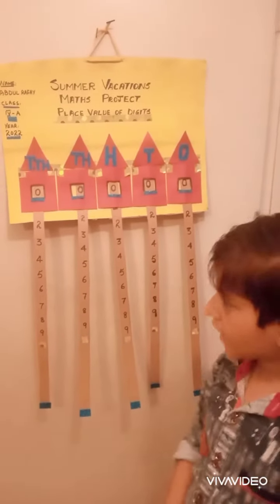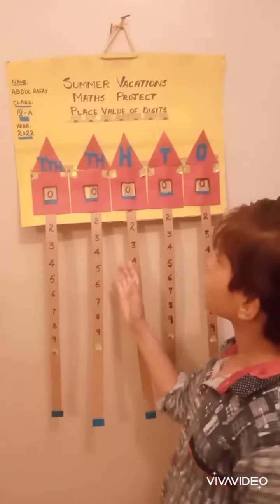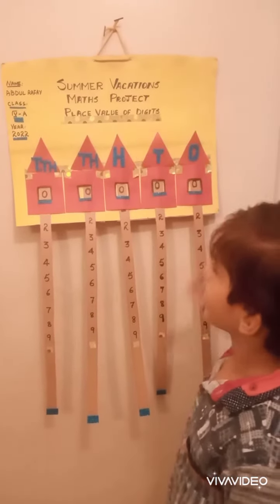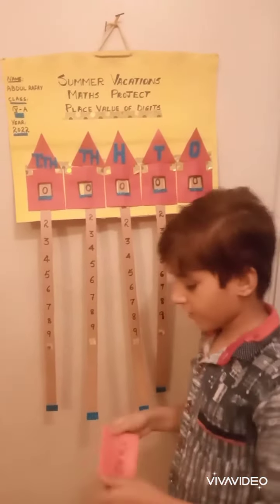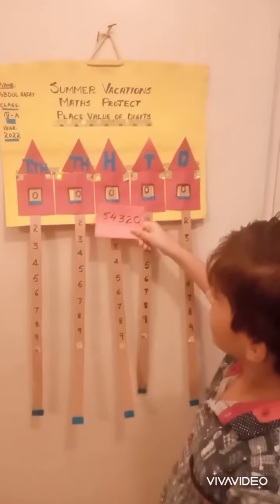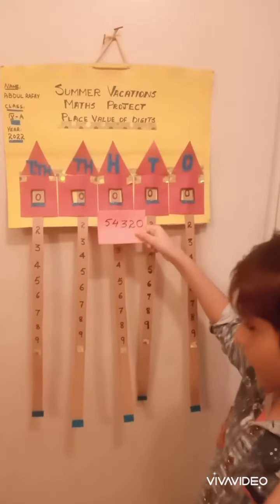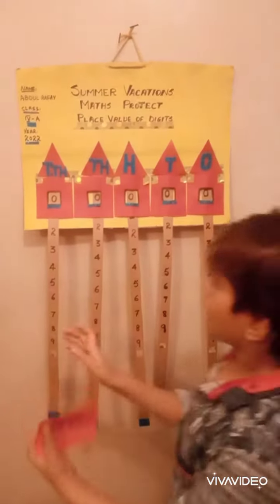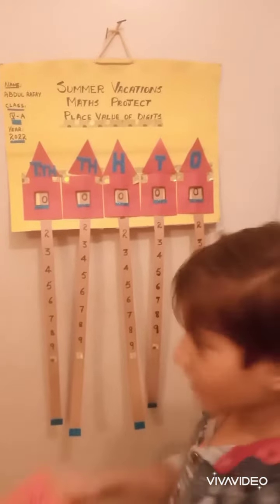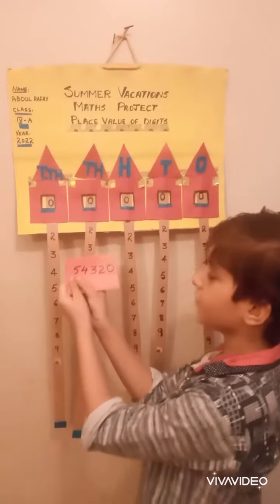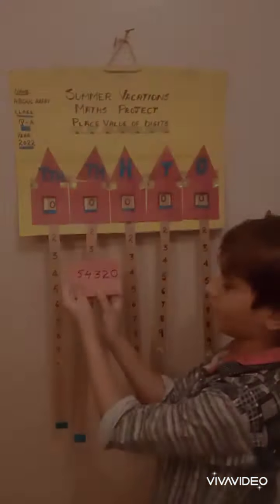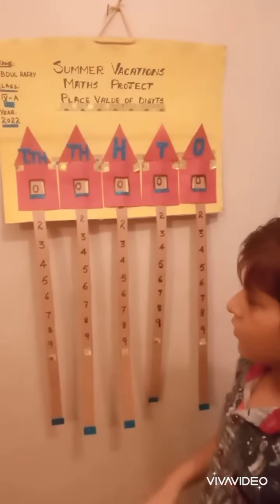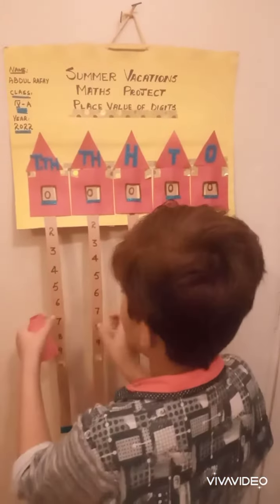Today I am going to explain my math project chart on place value. For example, we have this number 54,320. So how do we show this number on the chart? It goes in the 100,000s, 100s columns. Let's start.